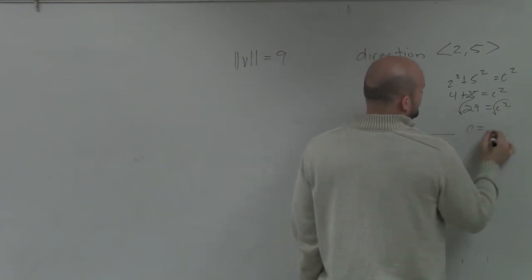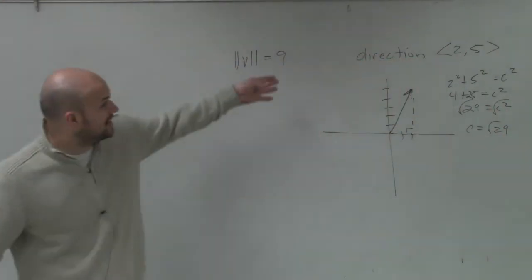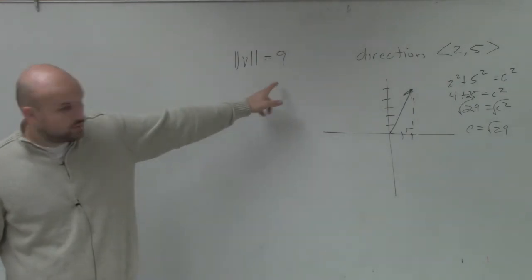Square root, square root, c equals the square root of 29. Well, is that square root of 29 equal to 9? No. So we got an issue, right?